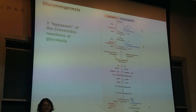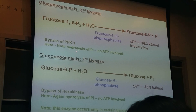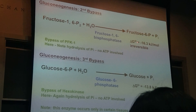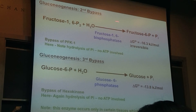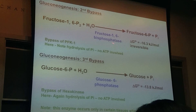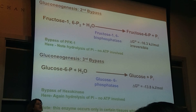The second bypass is the bypass of phosphofructokinase-1: fructose-1,6-bisphosphatase cleaves fructose-1,6-bisphosphate plus water to give fructose-6-phosphate. There's no ATP involved — you're just losing a phosphate by hydrolysis. Whenever you see 'phosphatase,' that's actually hydrolysis of a phosphate. The third bypass: glucose-6-phosphatase cleaves off the phosphate from glucose-6-phosphate — a nice irreversible reaction, no ATP, just hydrolysis. These are cases of hydrolysis, not phosphoryl transfer — you're just getting rid of that phosphate group.